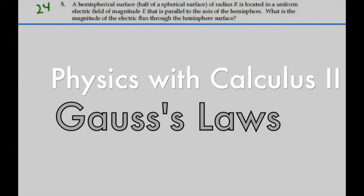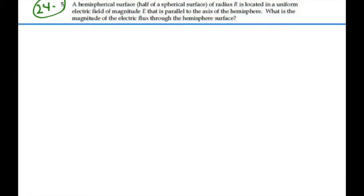Here's problem 24.5. A hemispherical surface, half of a spherical surface, of radius R is located in a uniform electric field of magnitude E that is parallel to the axis of the hemisphere. What is the magnitude of the electric flux through the hemisphere surface?